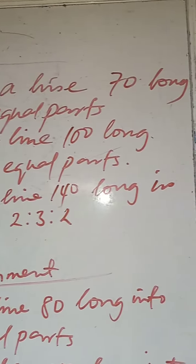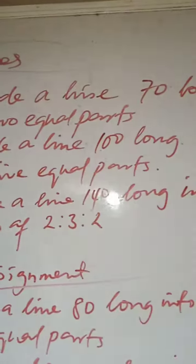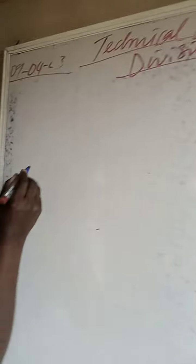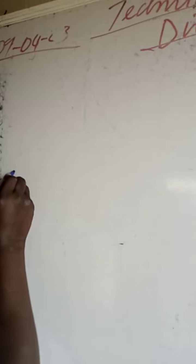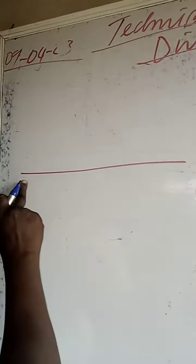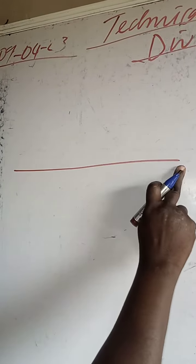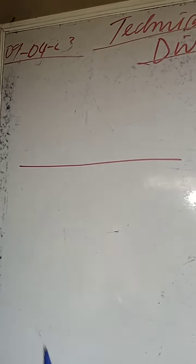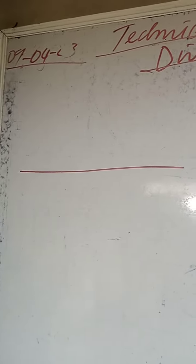The first question: divide a line which is 70 long into two equal parts. How do you divide a line into two equal parts? You rule the line and measure 70. Measure the line from here to here, it's 70. Now you have to divide it into two equal parts. That is, you need to bisect it.